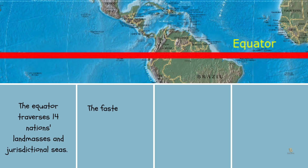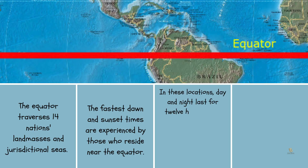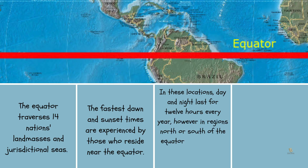The fastest dawn and sunset times are experienced by those who reside near the equator. In these locations, day and night last for 12 hours every day, however in regions north or south of the equator, the length of the day changes with the seasons.